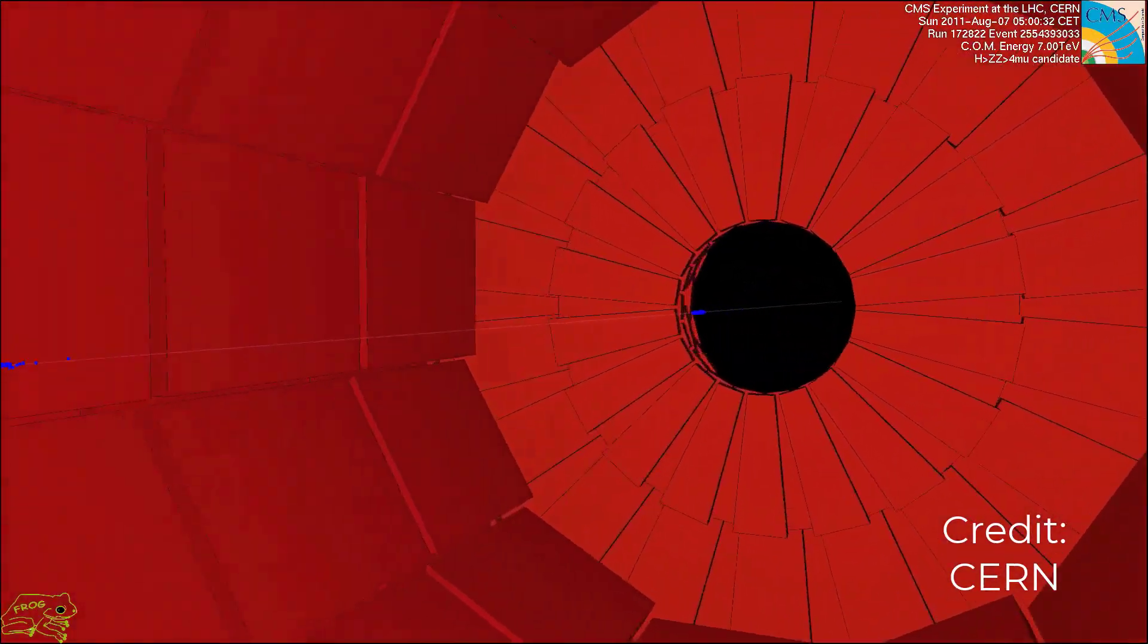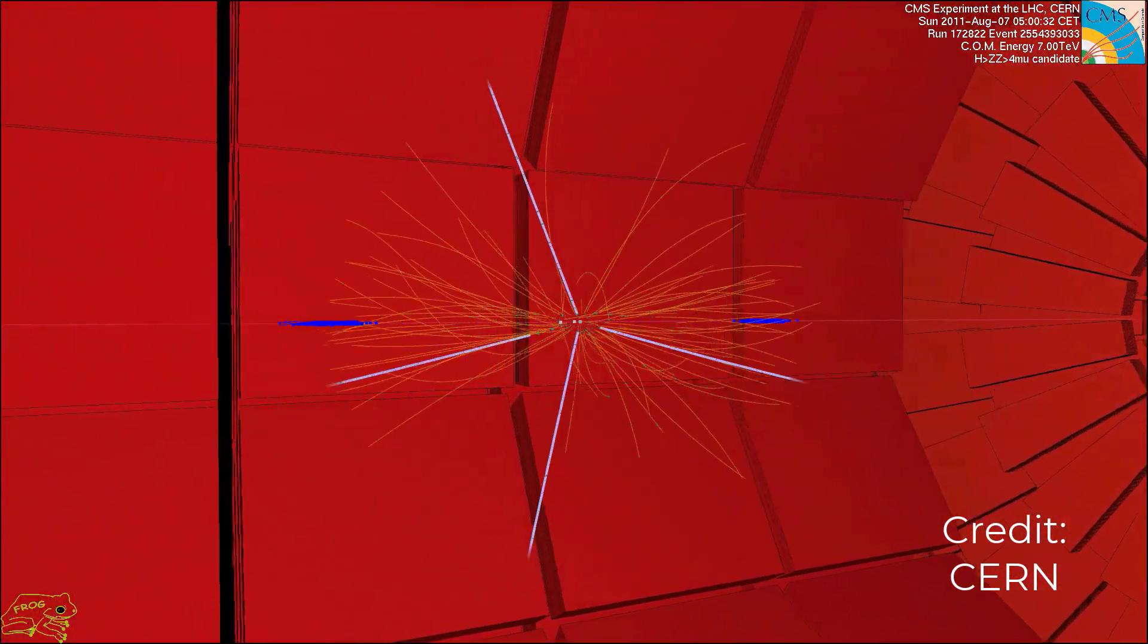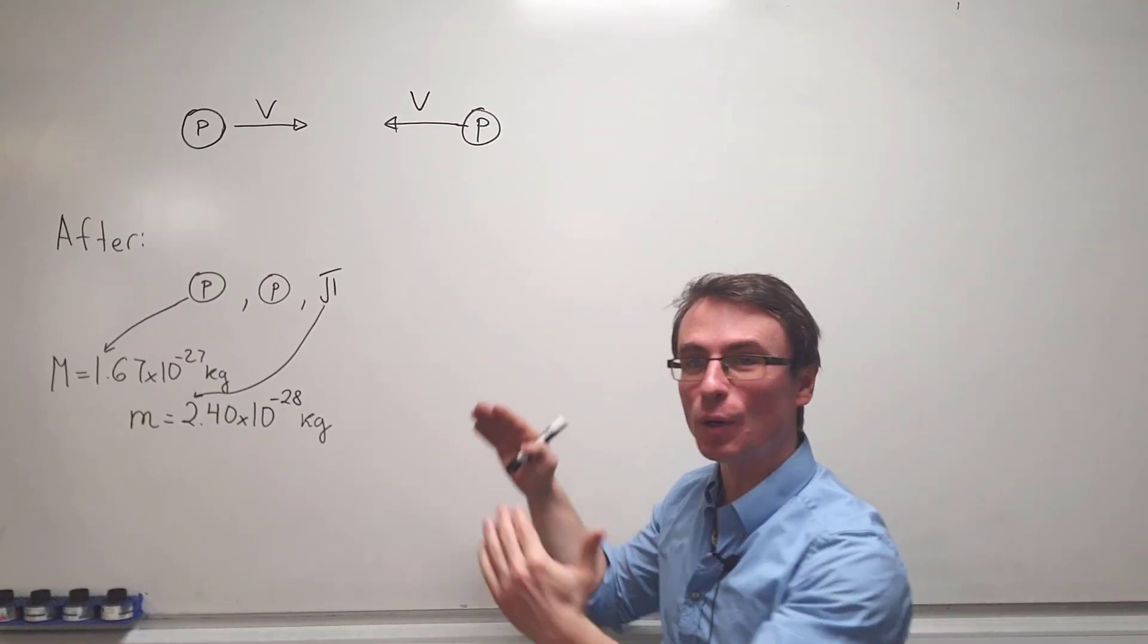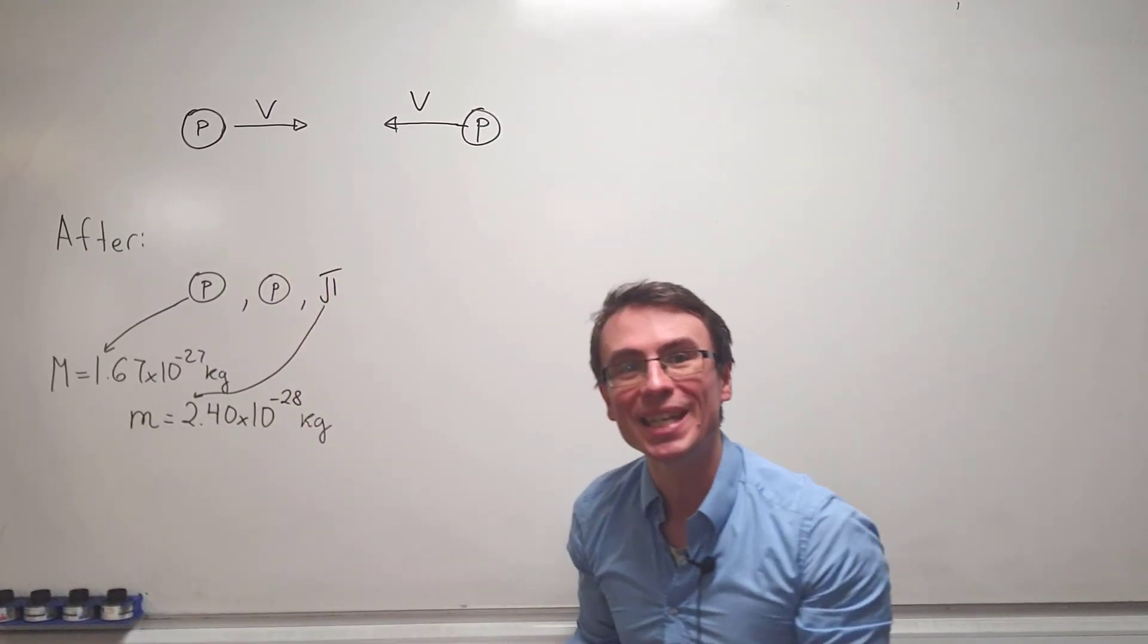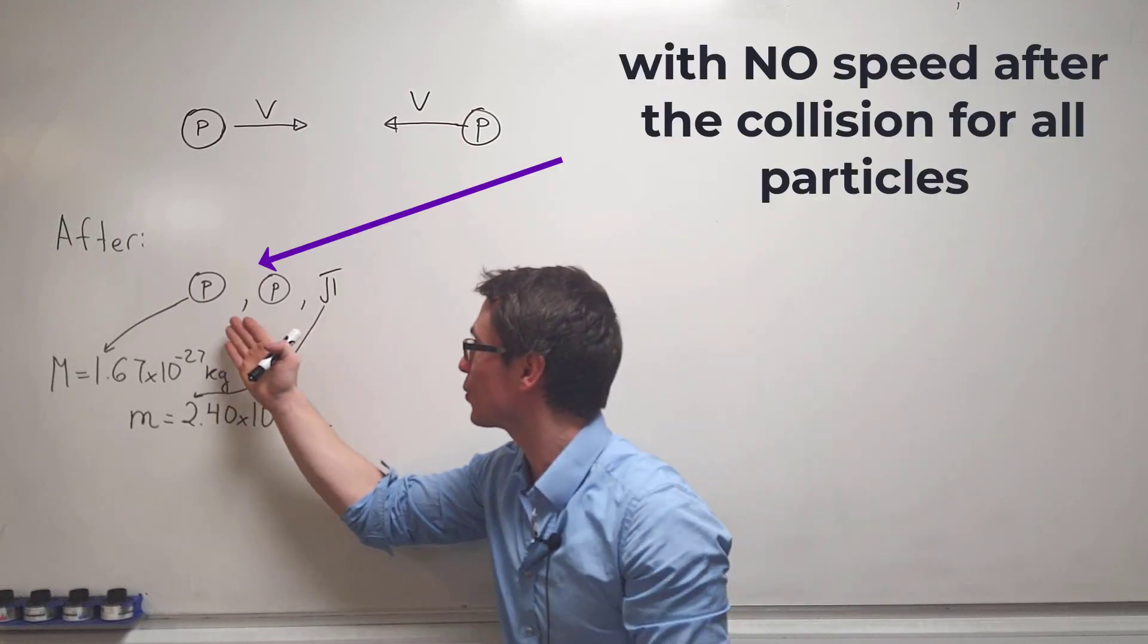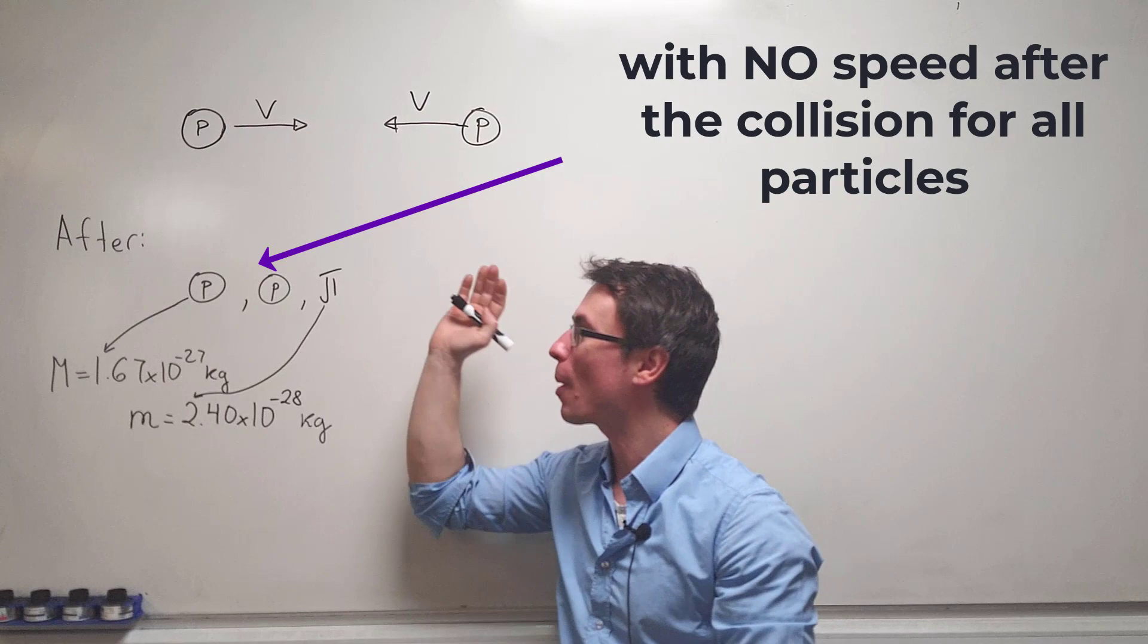Relativistic collisions are so different, and by the end of this video you will see exactly how. We have two protons that are moving with equal speeds towards each other, and after colliding they continue to exist but another particle called the pion appears.